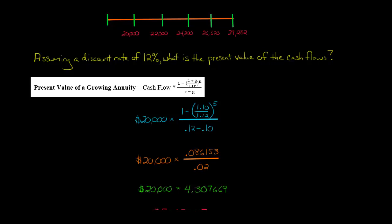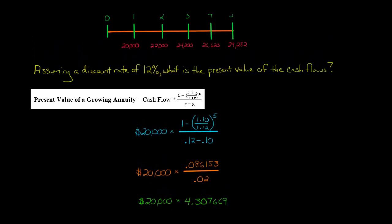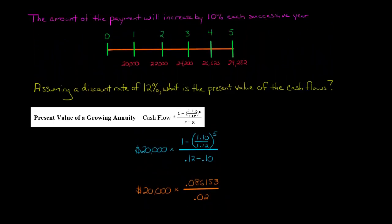So when we divide this by this, we get 4.307669. Multiply that by $20,000. And that gives us $86,153.37. So what is this $86,153.37? That is the present value of this stream of cash flows.